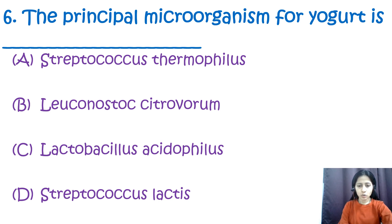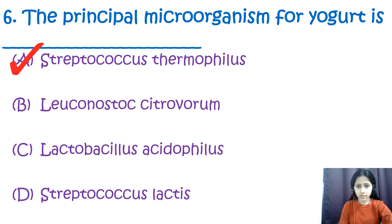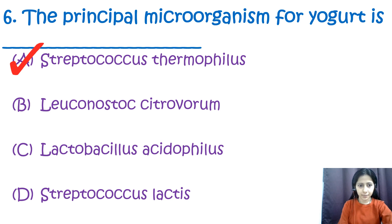Question number six: the principal microorganism for yogurt is option A: Streptococcus thermophilus, option B: Leuconostoc citrovorum, option C: Lactobacillus acidophilus, option D: Streptococcus lactis. The principal microorganism used in yogurt production is Streptococcus thermophilus — option A. For your information, Lactobacillus bulgaricus is also involved. These bacteria are added to milk, which ferments to produce lactic acid, causing the milk to coagulate and form thick, tangy yogurt.